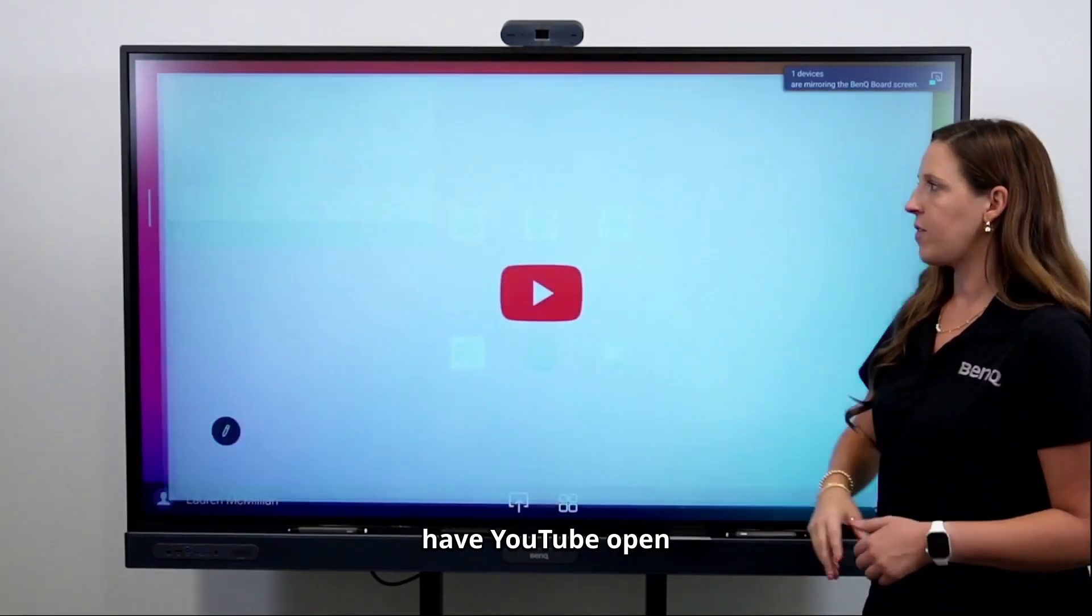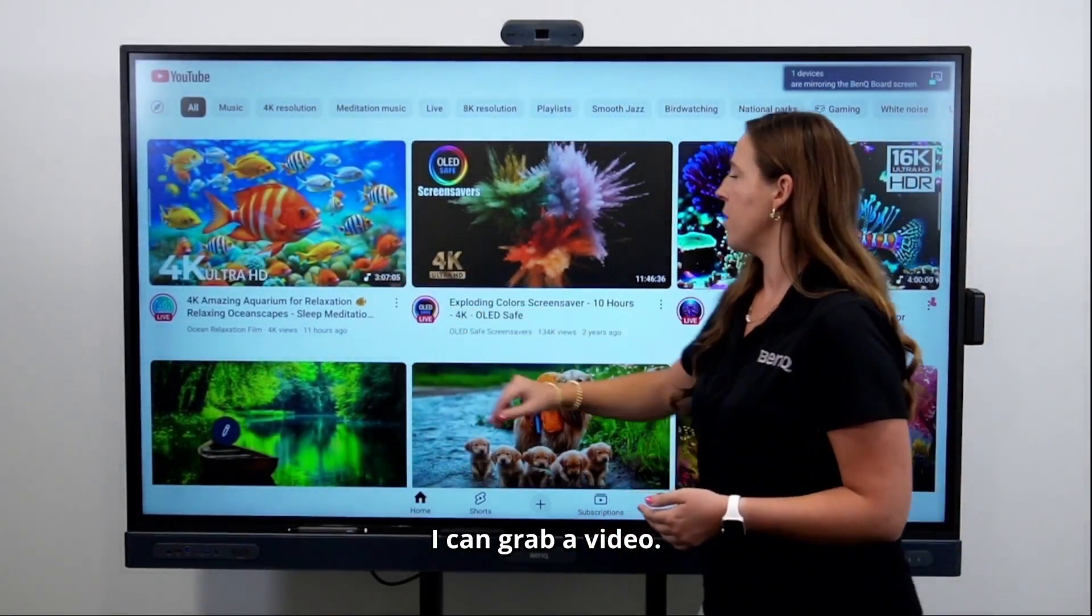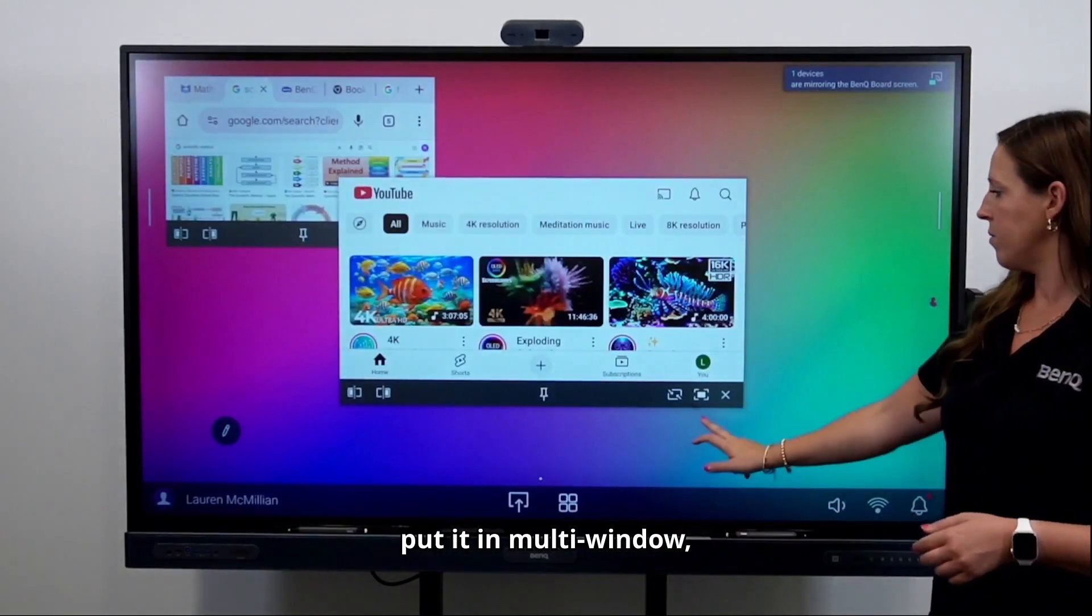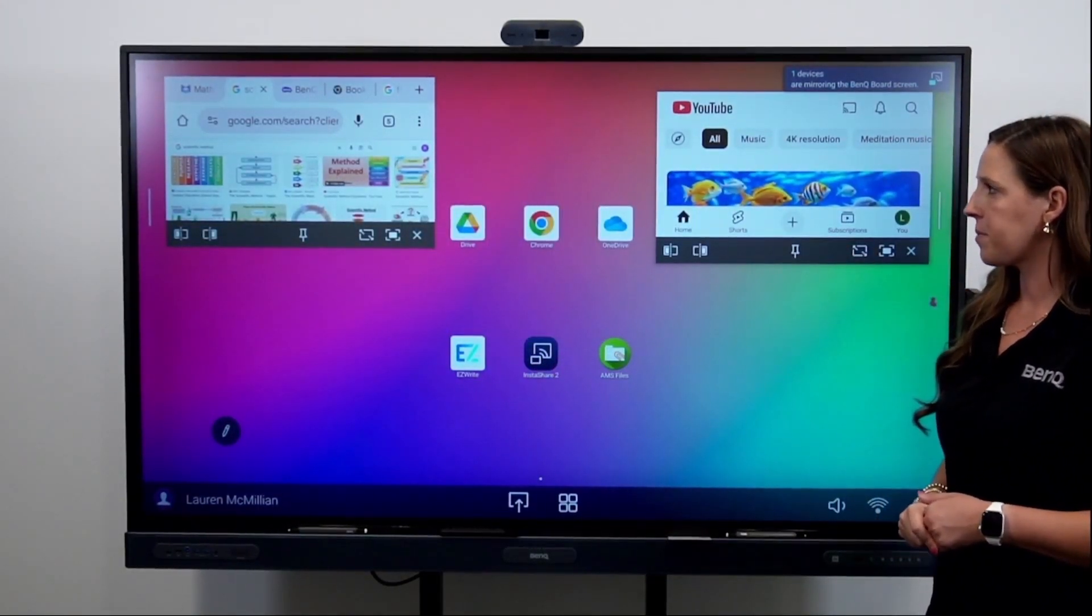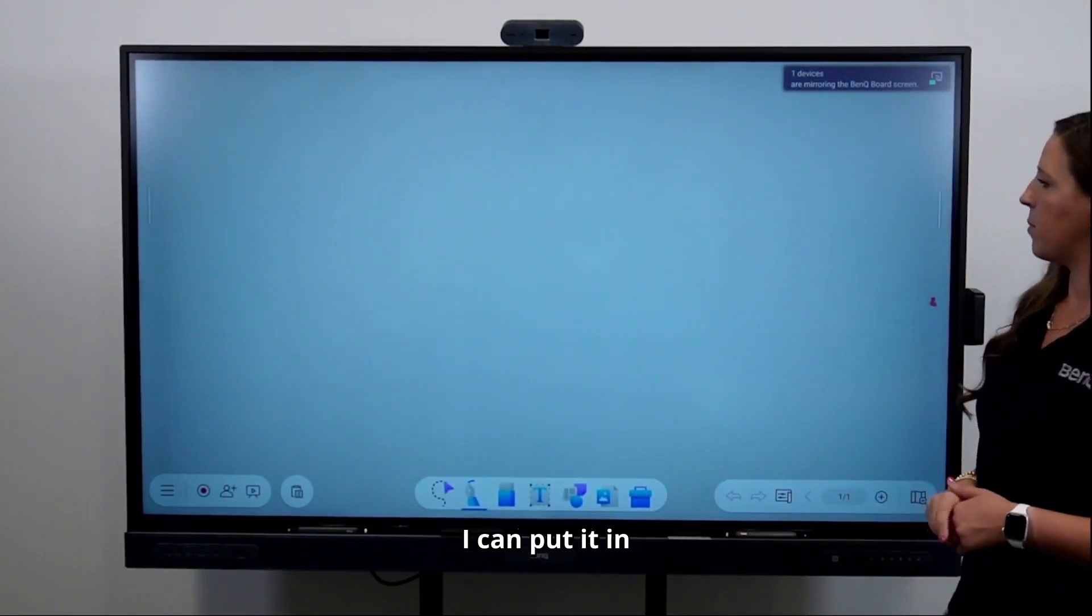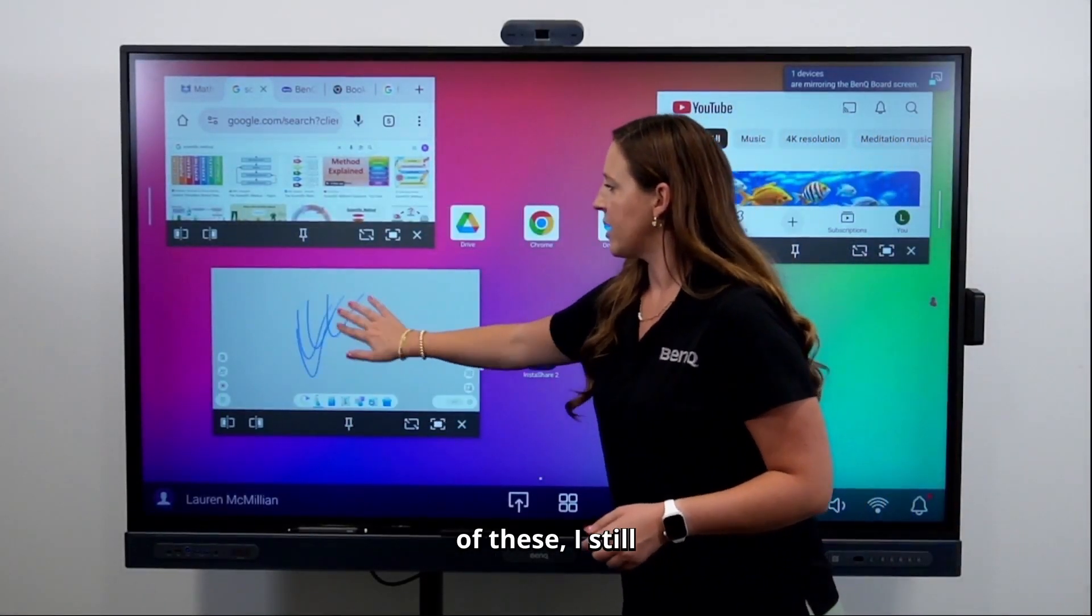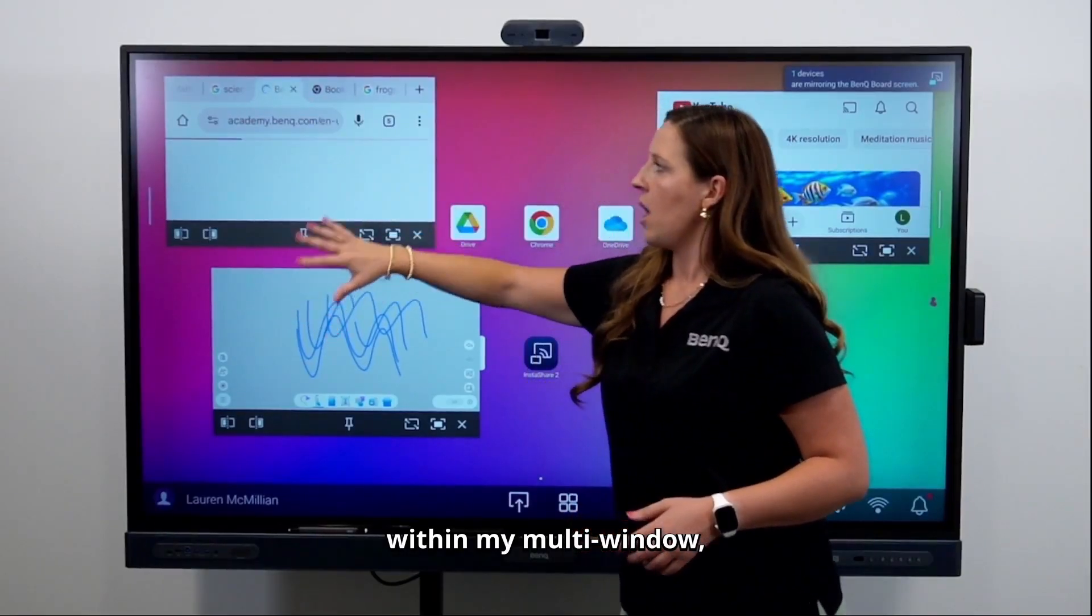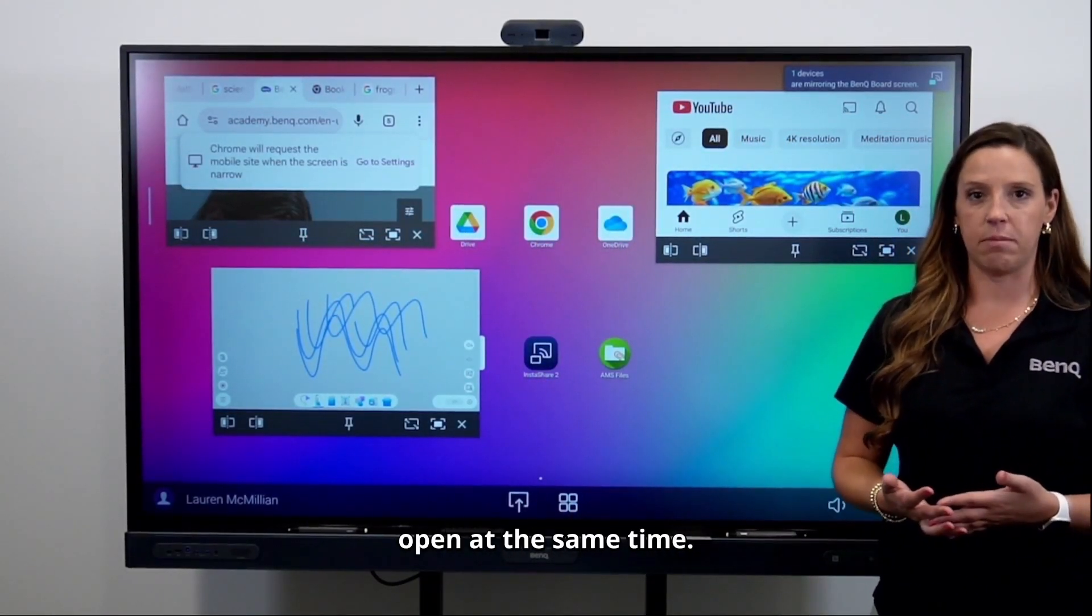So maybe I want to have YouTube open at the same time. I can come into YouTube, grab a video. Again, I tap the side menu, put it in multi-window. I can make it smaller and now I have my YouTube over here. Maybe I also want to have my EasyWrite open. I can put it in multi-window, change the size. All of these, I still have full touchback and full functionality within my multi-window, but I can utilize the resources and have multiple things open at the same time.